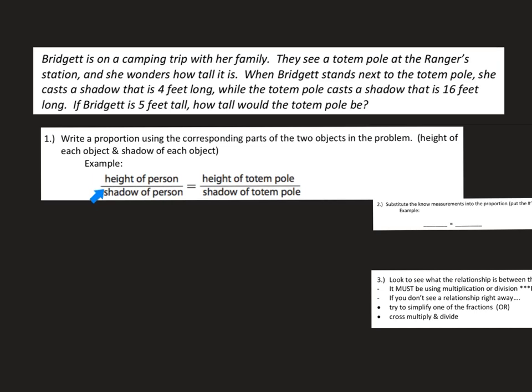This whole entire ratio is about one person. Then this ratio, height of totem pole, shadow of totem pole. This is about the object and we're comparing their height on top to their shadow on bottom.